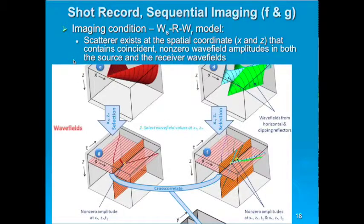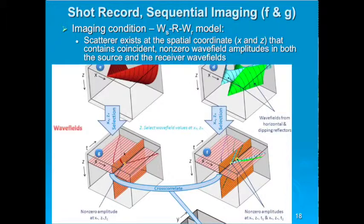Here's a statement of the imaging condition, quoted from Sava and Hill's tutorial: the scatterer exists at spatial coordinate X and Z that contains coincident non-zero wave field amplitudes in both the source and the receiver wave fields. We're looking at the X and Z planes on the fronts of these cubes. The horizontal section in salmon color is at a particular non-zero depth z*, and the orange vertical plane is at location x*. We want to look at x* and z* and ask: what can we image there under this imaging condition?